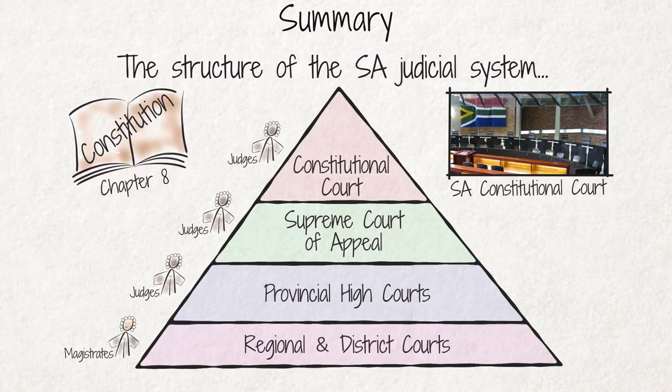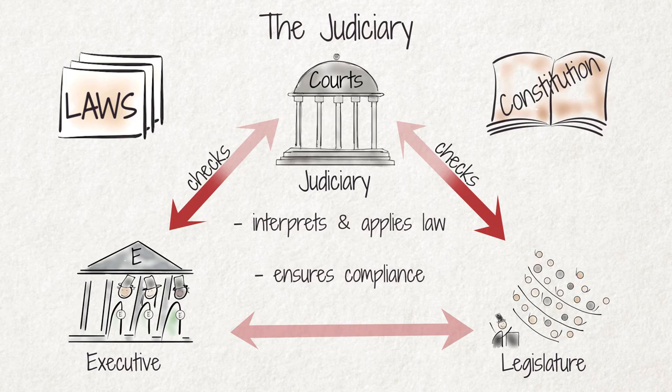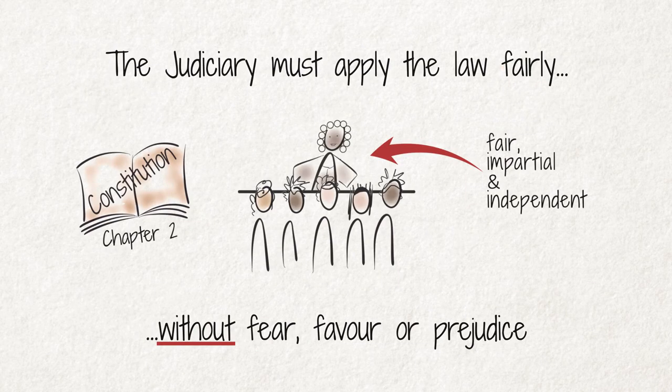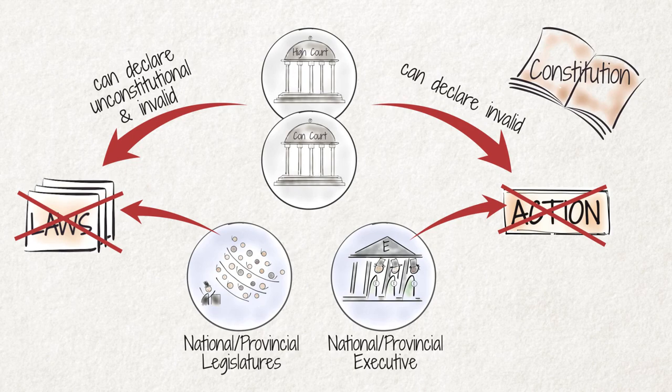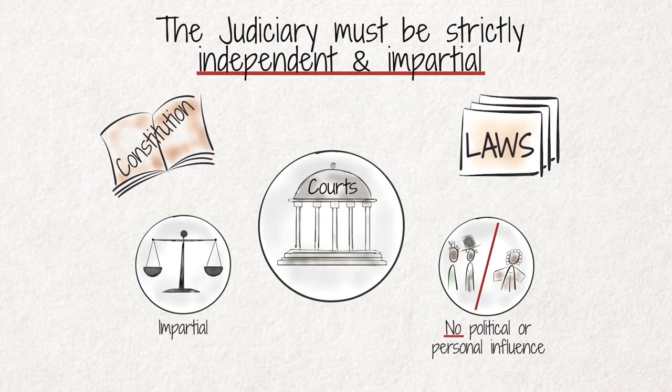Summary: The judiciary is composed of various courts within a democratic state and the judges and magistrates who sit in the courts of South Africa. The judiciary does not introduce or pass any laws, but it is meant to interpret the law and apply the constitution. The judiciary must apply the law fairly and without fear, favour or prejudice to all disputes brought before it. It also interprets the constitution and declares invalid any laws passed by the legislature or actions taken by the executive that are in conflict with the constitution. To fulfil its role, the judiciary must be strictly independent and impartial.